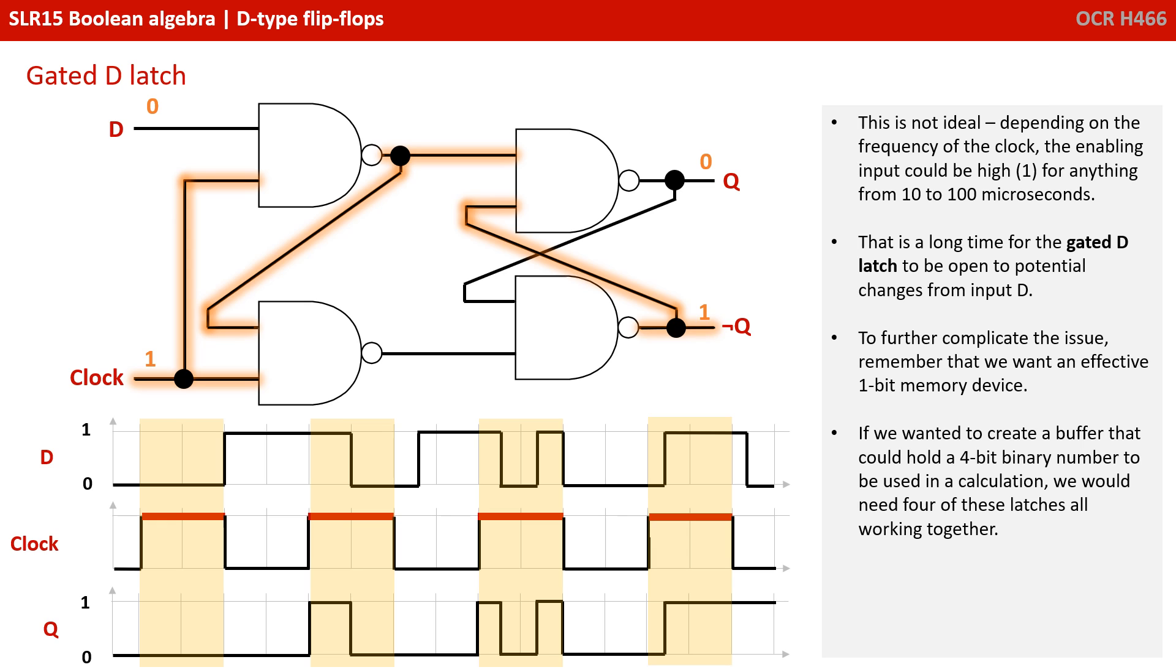This is not ideal. Depending on the frequency of the clock, the enabling input could be high for anything from 10 to 100 microseconds. That's a very long time for a computer for the gated D-latch to be open to potential changes from its input.